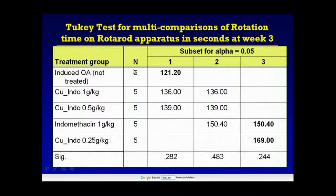This table shows the multicomparison of rotation time on the Rotarod apparatus in seconds at week 3. The untreated group showed the lowest rotation time among all groups, while the group treated with the lowest dose of copper indomethacin gel showed significantly higher duration of rotation at week 3. This indicates improvements in joint mobility, motor function, and less ambulatory-evoked pain — that is, better analgesia in that treated group.